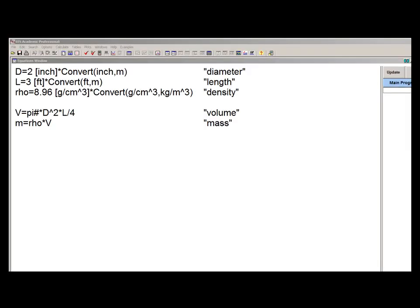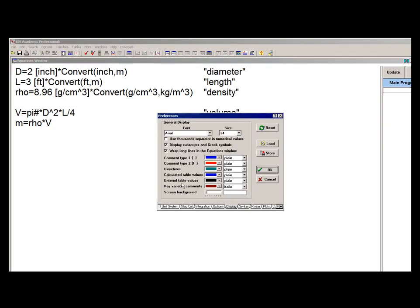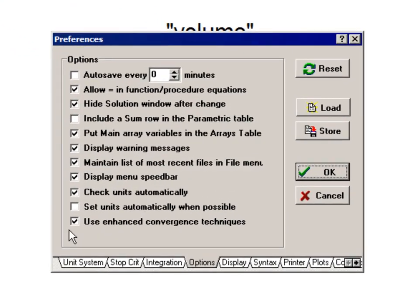It is possible to modify both of these settings, so if we go to the Options tab of the Preferences dialog, you can see here that it's possible to turn automatic unit checking off.